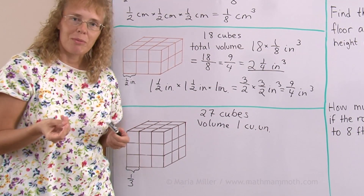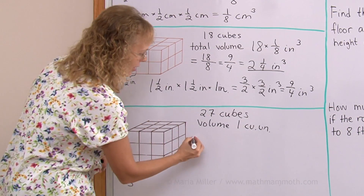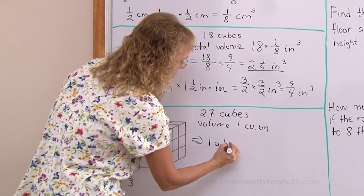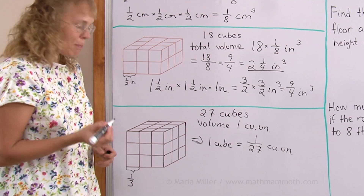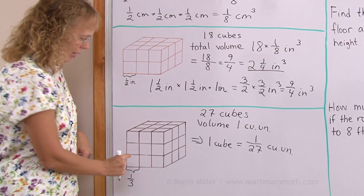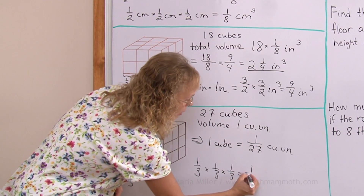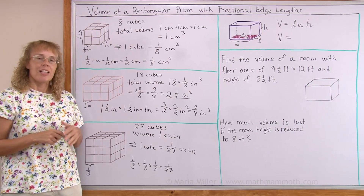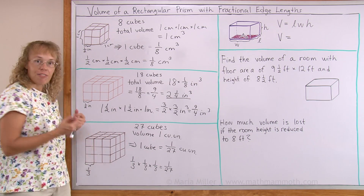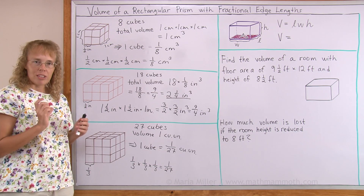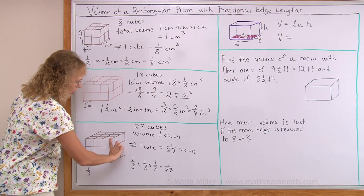You can imagine it being cubic centimetres if you prefer. Therefore, one cube here has to have the volume of one twenty-seventh of a cubic unit. We will also get the same result if we take one cube and multiply its width, depth, and height, because one-third times one-third times one-third is indeed one twenty-seventh. All of this was done to point out that if you have a rectangular prism and its dimensions are fractions, you can still multiply those three dimensions to get the volume. That formula doesn't only work for whole numbers — it also works if the edge lengths are fractional.